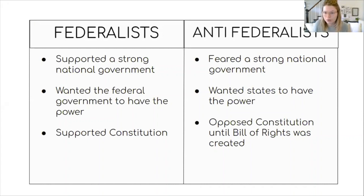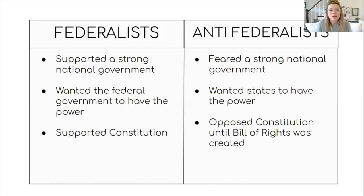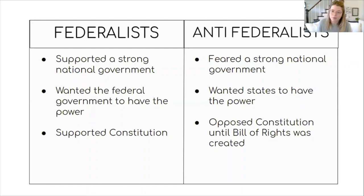While you're writing, I'll go through the arguments and add a little more information. The federalists supported a strong national government — they wanted the federal government to have the power, and they supported the constitution. The anti-federalists feared a strong national government — they wanted the states to have the power, and they opposed the constitution until the Bill of Rights was created.